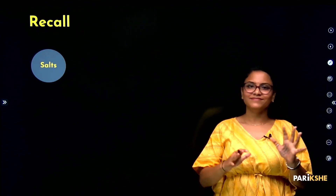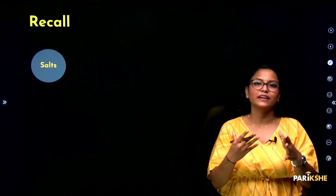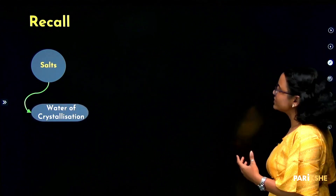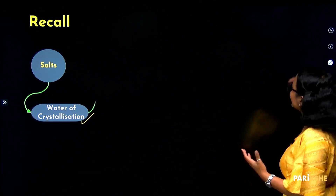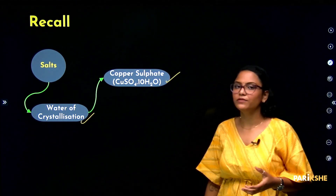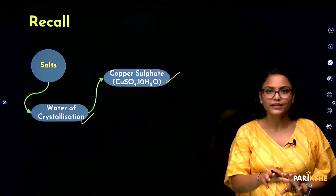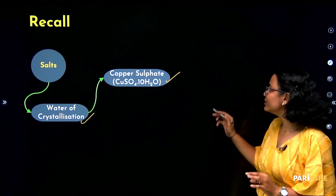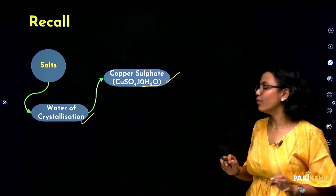This video is done. We covered the concepts of water of crystallization and the compounds: copper sulphate (Activity 2.15 — blue to white color change), then washing soda (sodium carbonate, 10H₂O), and calcium sulphate. For copper sulphate, the fixed number of water molecules is 5.